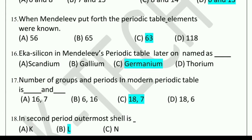Question number 15: When Mendeleev put forth the periodic table, how many elements were known? Options: 56, 65, 63, or 118. The correct answer is 63.